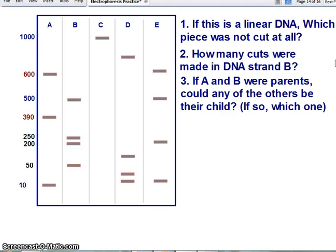Okay, we'll do this one really quickly. This is a linear DNA in which piece was probably not cut at all. That would be PC. PC is all the way back here at 1,000, and there's only one band. If it was cut, you should have at least seen two bands.